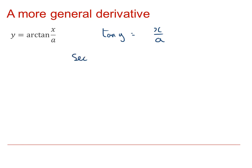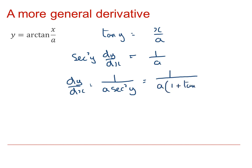And when we differentiate, this time we get sec squared y dy by dx is equal to 1 over a. And therefore, dy by dx is equal to 1 over a multiplied by sec squared of y. But we can use the trigonometric identity again. So this is 1 over a multiplied by 1 plus tan squared y.